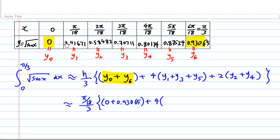Then plus 4 times all the odd position y, which is y1 plus y3 plus y5. I'm going to copy them here as 0.41671 plus 0.70711 plus 0.87524.